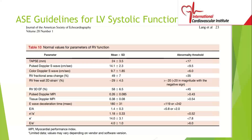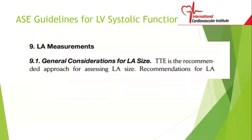You can do strain on the RV free wall, though it's not routinely done. You can also do RV ejection fraction using three-dimensional echo — it's abnormal if the ejection fraction is less than 45%, so it should be 45% or greater. There are other tools to evaluate RV function, but they're not routinely performed.